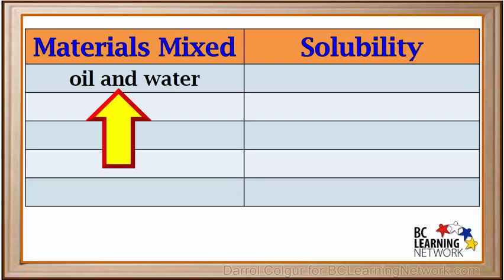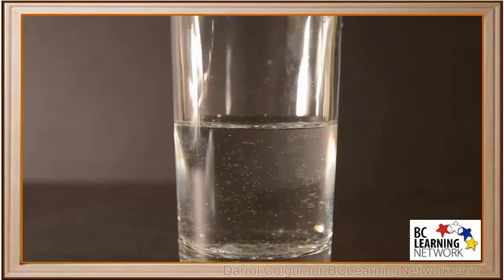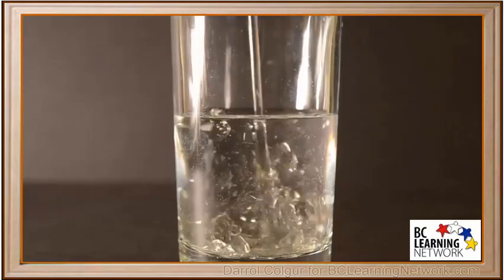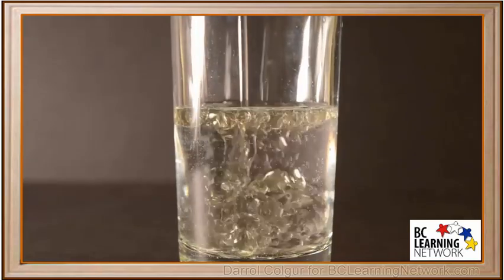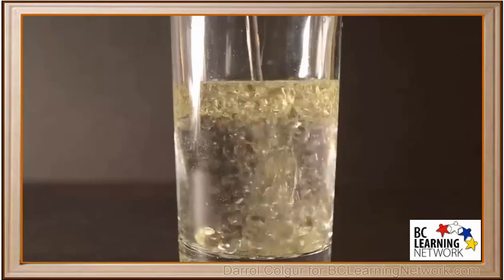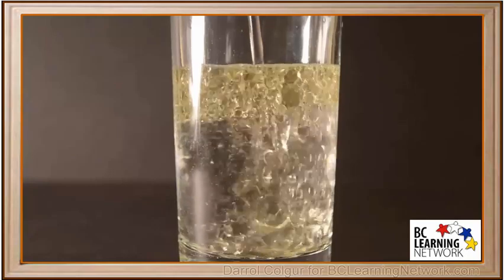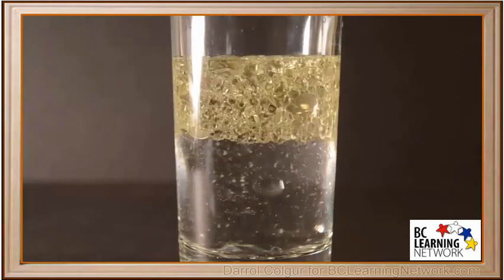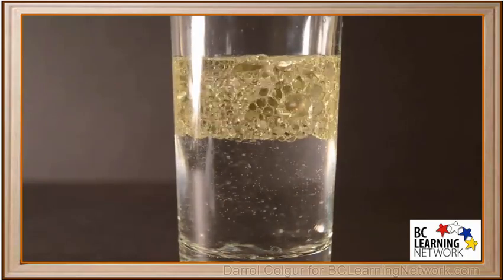We'll start by adding some vegetable oil to water. We have a glass with some water and we'll pour some oil into it. We see that the oil separates from the water and floats on top of the water.